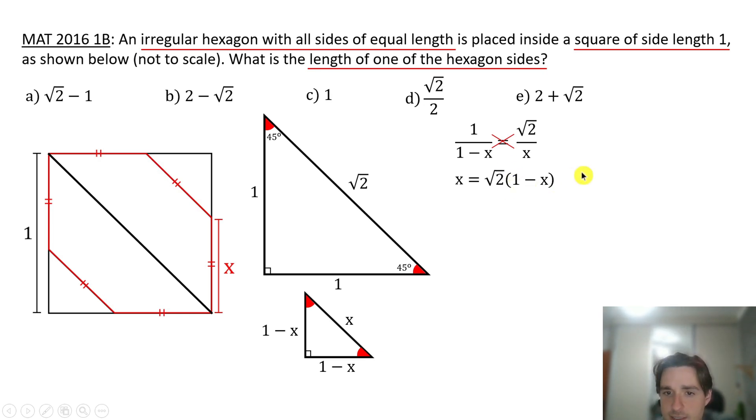It's equal to square root of two minus square root of two x. We are going to pass this term with a positive sign to the other side. Now we are going to factor out x to obtain that x multiplied by one plus square root of two equals square root of two.